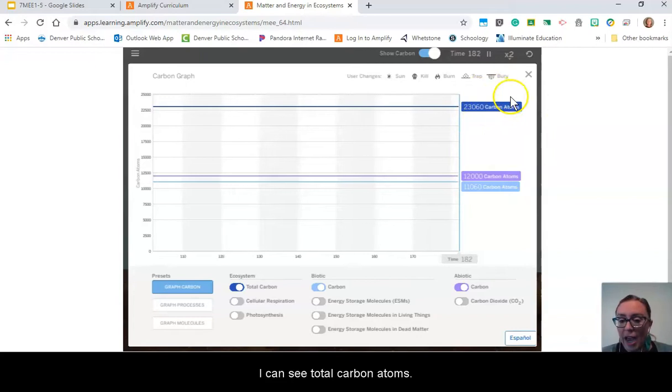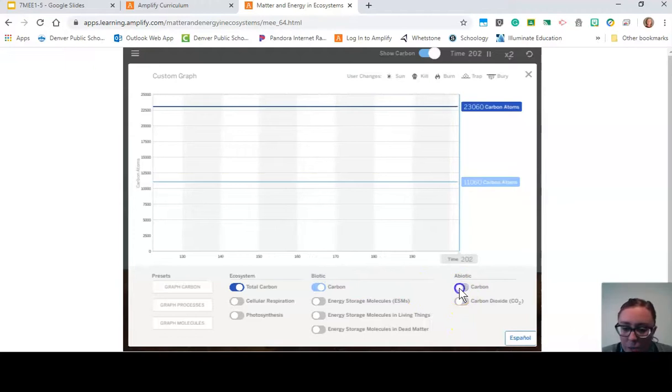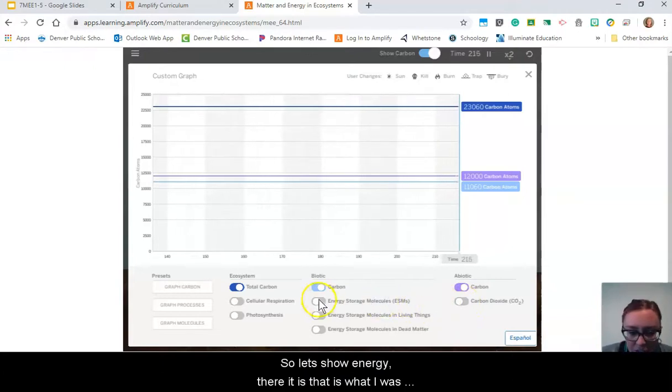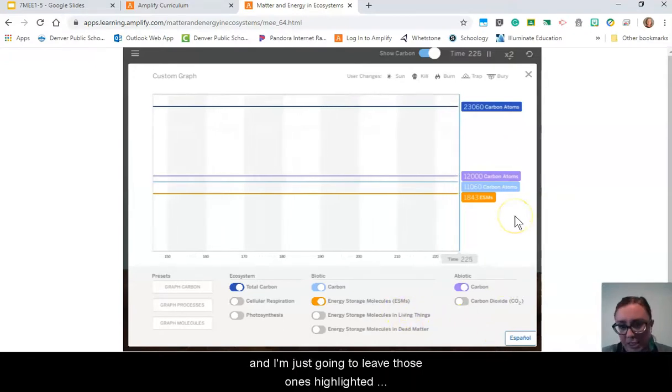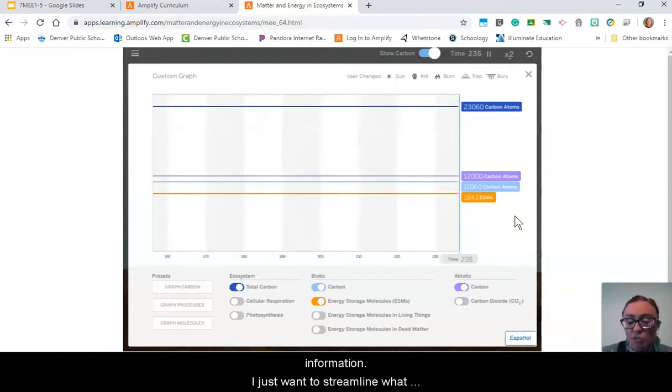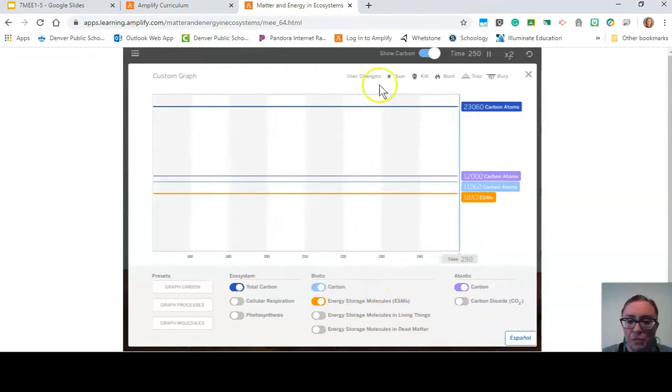I can see total carbon atoms, carbon atoms in both the biotic and abiotic sections. I'm going to make sure these things are turned on. Let's show energy—there it is, that's what I was looking for. Energy storage molecules. I'm just going to leave those highlighted because I don't want to confuse myself with too much information. I just want to streamline what I'm looking for, and that is these energy storage molecules.